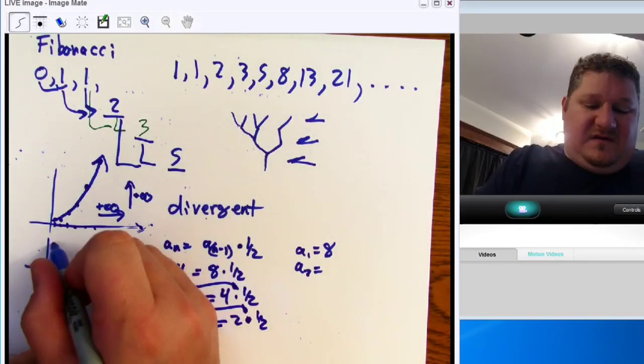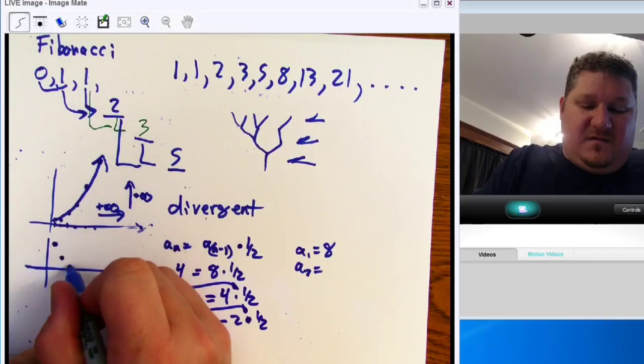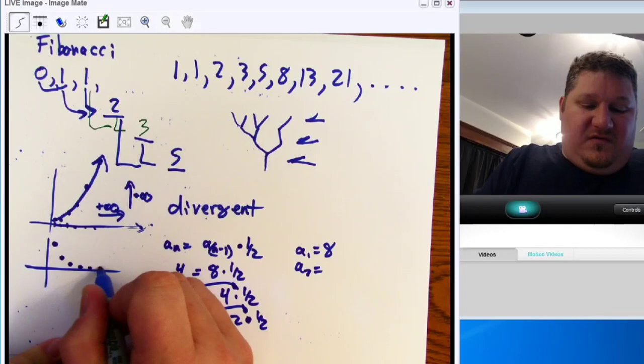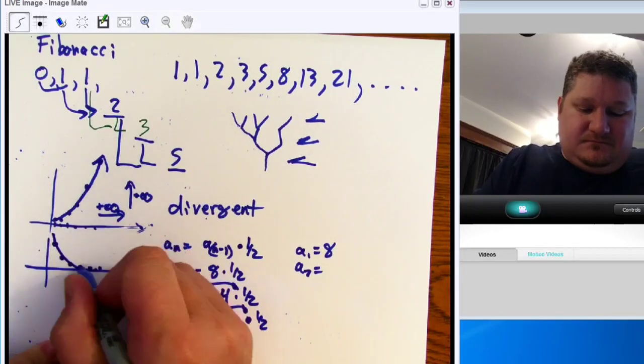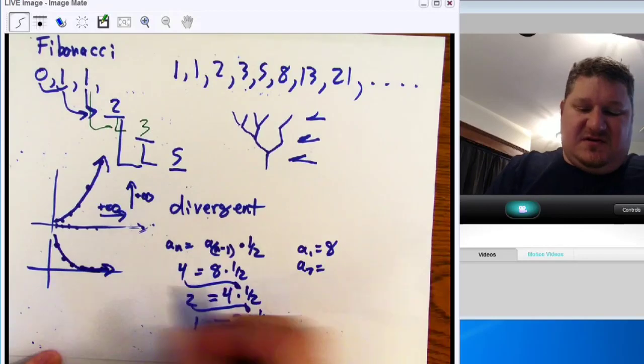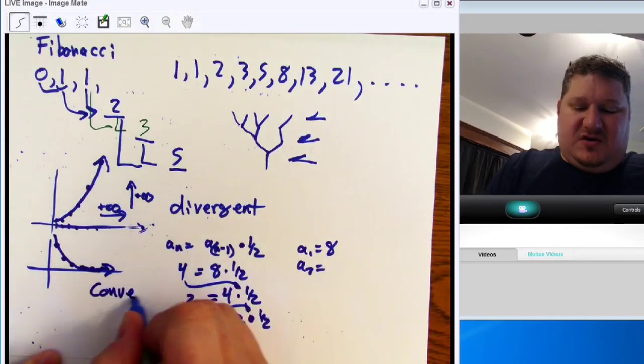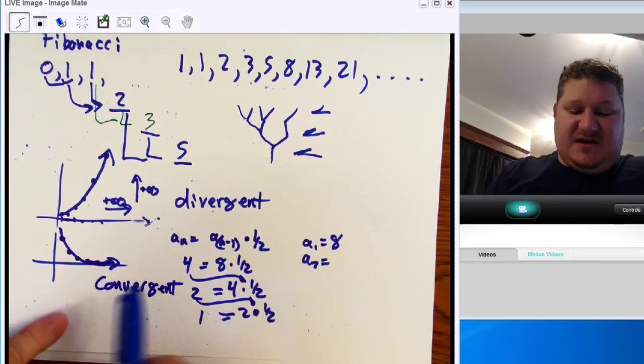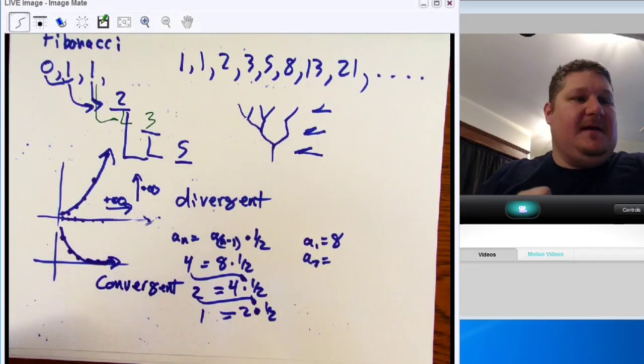And obviously, you can see we have 4, 2, 1. Then it's going to go 1 half, 1 fourth, 1 eighth. And it's going to come down toward the x axis. This, of course, is going to be convergent because it's going to converge. It's going to come along with the axis.